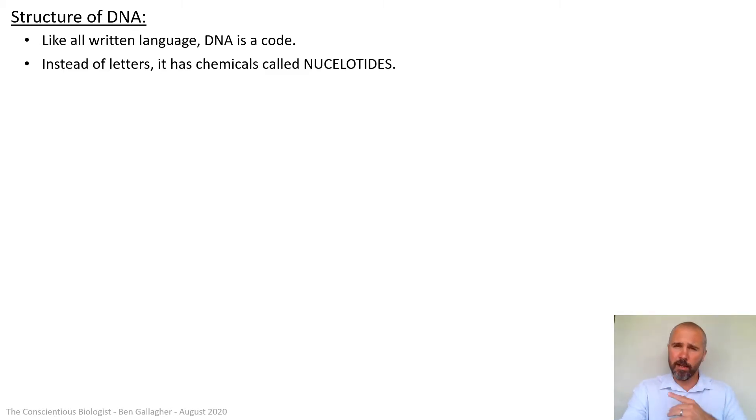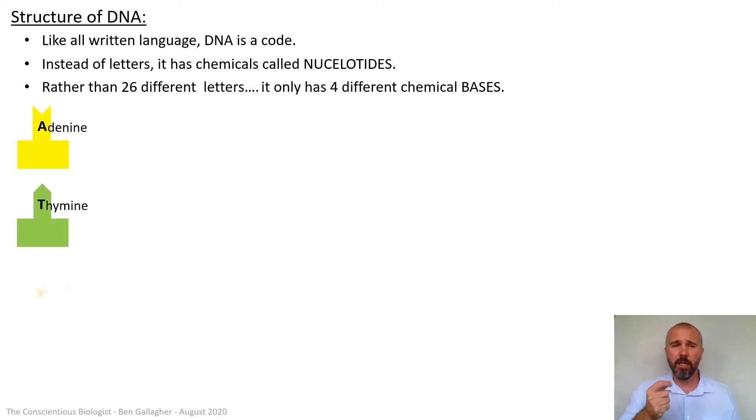But just like in our alphabet, we have 26 letters and we can use random combinations of those 26 letters to make our words to make all the various different forms of words and meanings that we need. DNA doesn't have 26 letters. It just has four different types of nucleotide, which are called bases. So the base is a chemical that sticks out of a nucleotide that makes it unique. But there's only four of those and they're these. They're adenine, thymine, cytosine and guanine. Those four over there.